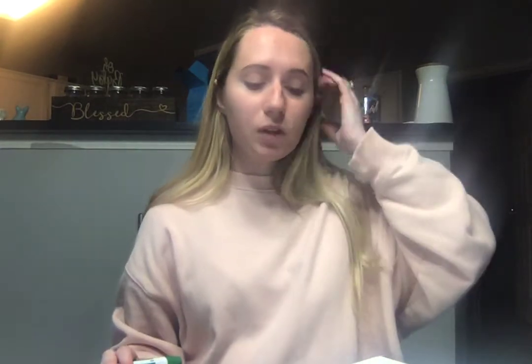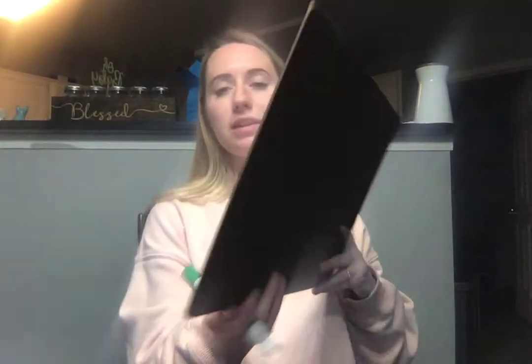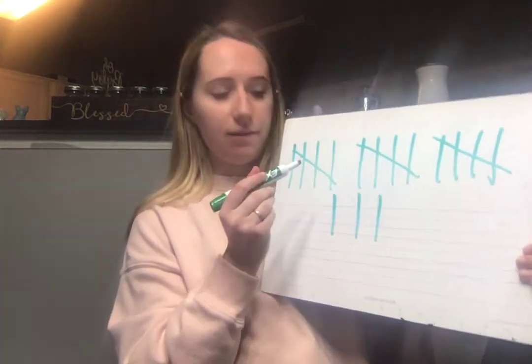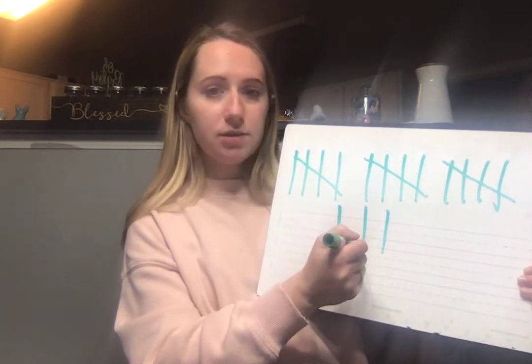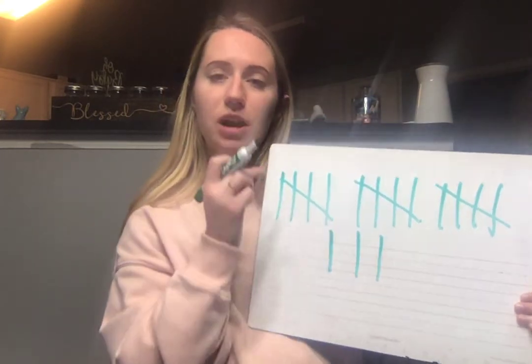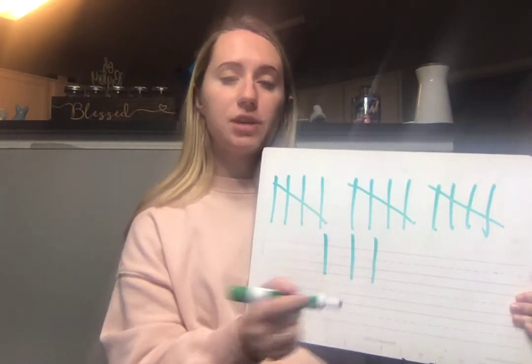We'll do one more. How about the number 18? That's a big one. Try the number 18. Okay, I'm ready. If you're not ready, pause it. This is 18: five, ten, fifteen, sixteen, seventeen, eighteen. So you should have three groups of five and then three tally marks.